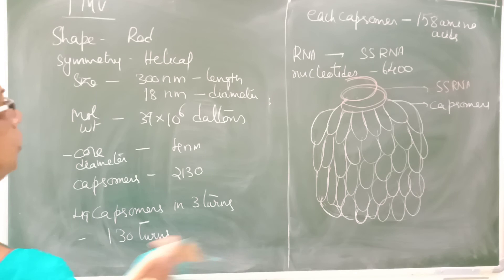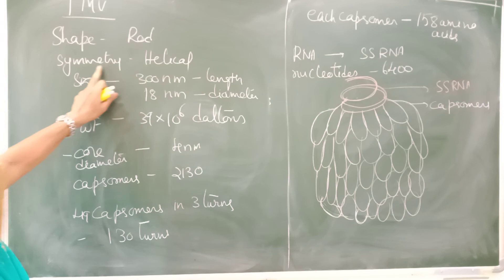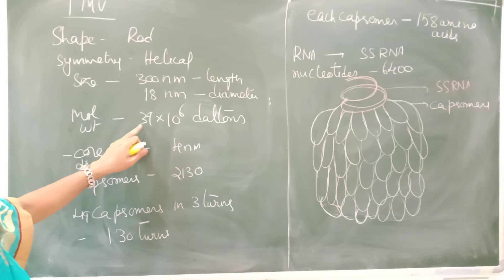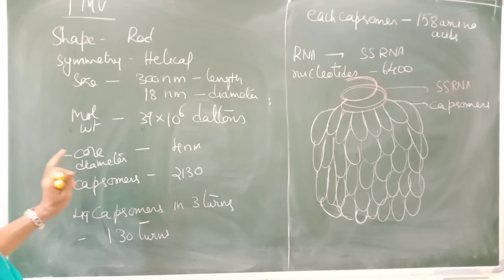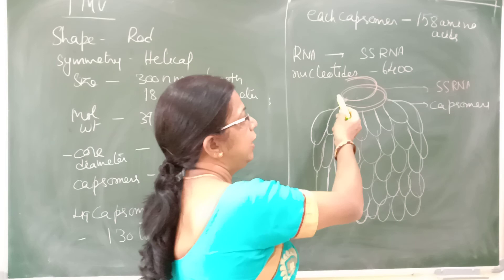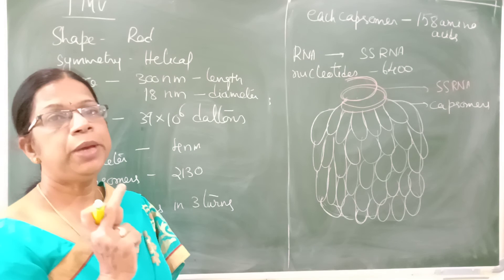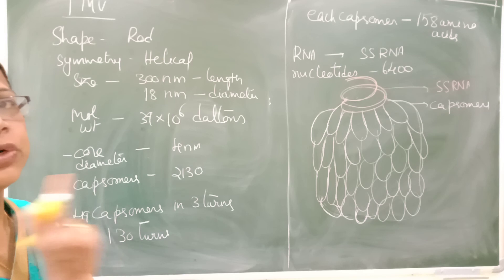Now let us understand the structure of TMV, the Tobacco Mosaic Virus. The shape of TMV is rod-shaped and its symmetry is helical. Its size is about 300 nanometers in length and 18 nanometers in diameter. Its molecular weight is 39 × 10⁶ daltons. The RNA is arranged in a helical manner forming a central hollow core with a diameter of about 4 nanometers — like a spring forming a central hollow space.